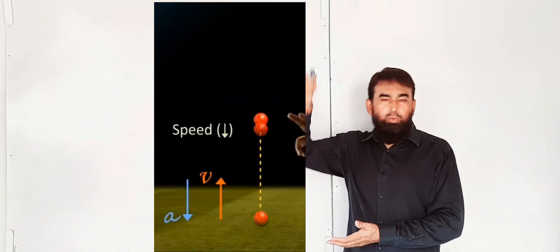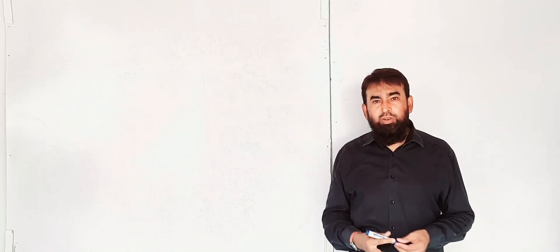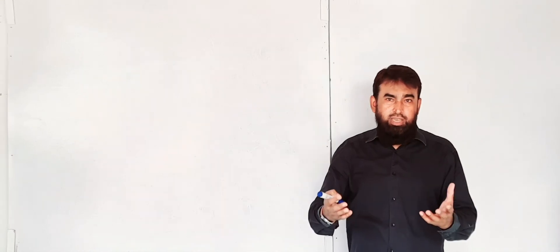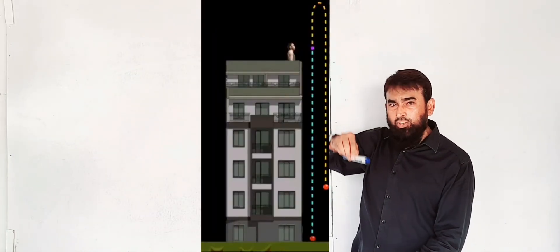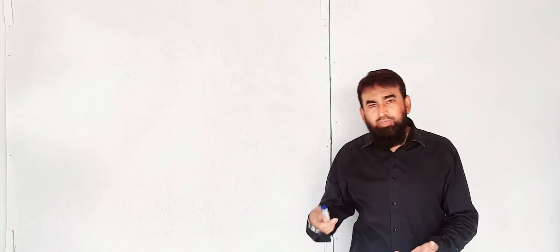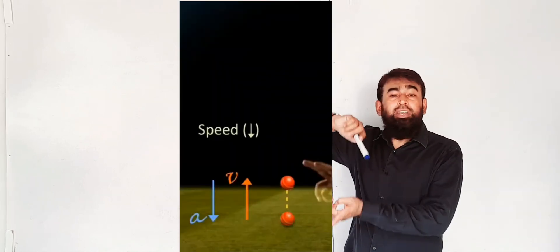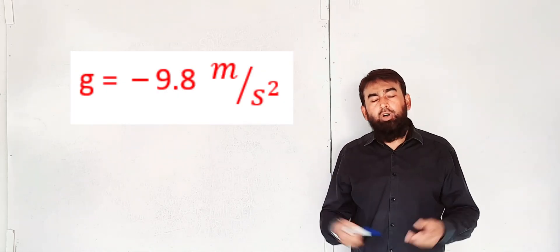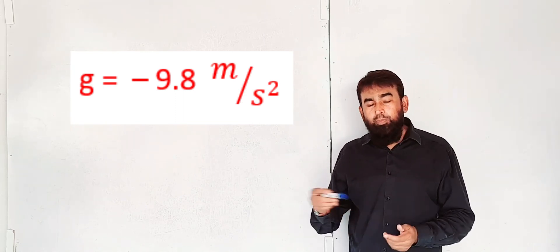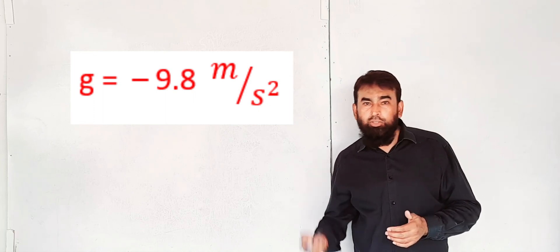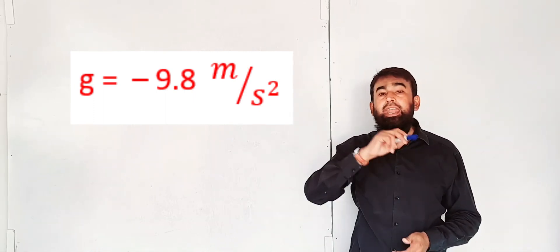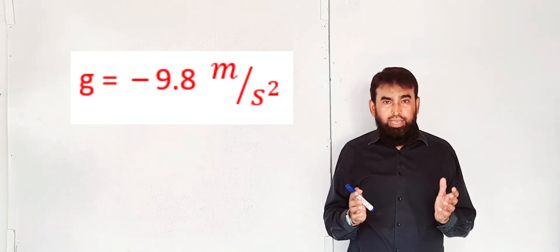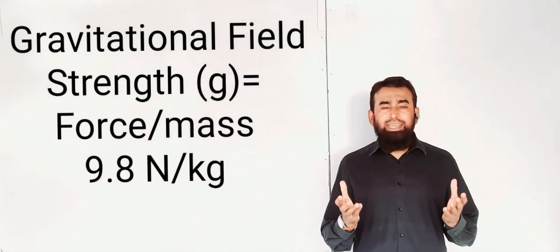If you are throwing a body in the vertically upward direction, it is going against the pull of gravity. When it is going against gravity, its acceleration is taken as negative acceleration. When a body goes in the upward direction, its velocity gradually decreases. When the body comes towards the surface, velocity increases; when thrown upward, velocity decreases. When velocity is decreasing, there is negative acceleration, also called retardation or deceleration. So when a body is thrown upward, the value of g is negative 9.8 meter per second square.